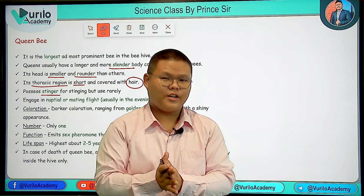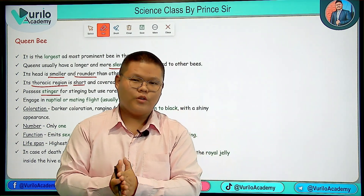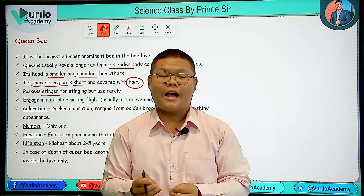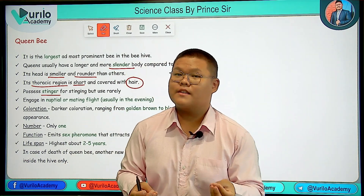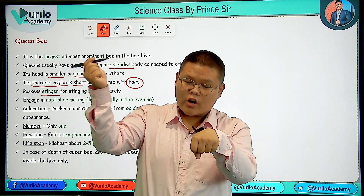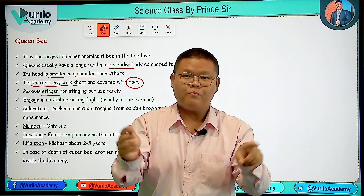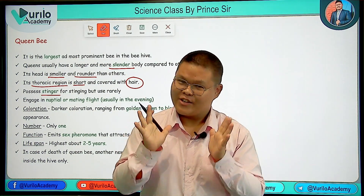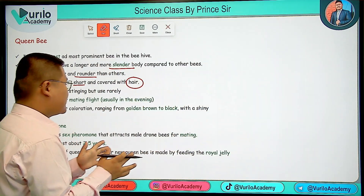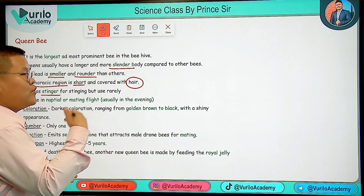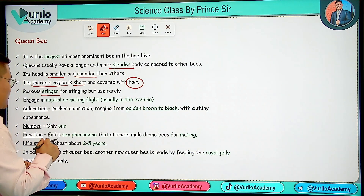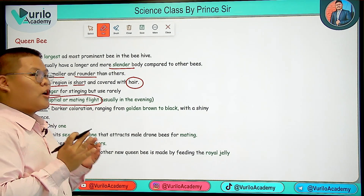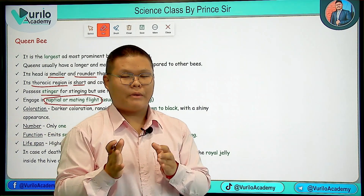The stinger is present in the Queen Bee. In the beehive, different conditions apply. The stinger is a key identifying feature of the Queen Bee.